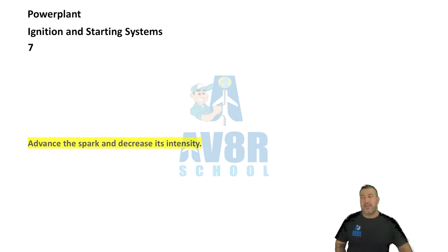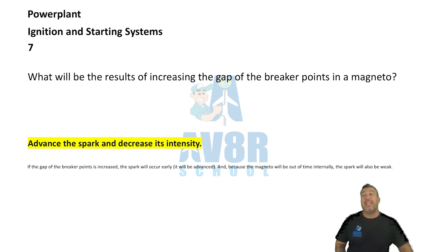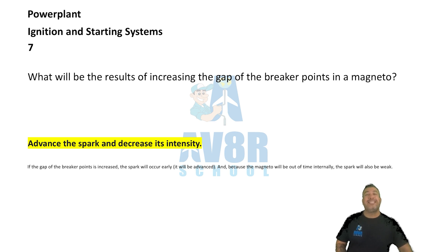Number seven: Advance the spark and decrease its intensity. What will be the result of increasing the gap of the breaker points in the magneto? To advance the spark and decrease its intensity.